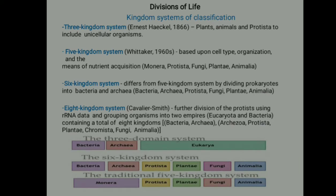Division of life — Kingdom systems of classification. The Three Kingdom system was proposed by Ernst Haeckel in 1866, including plants, animals, and Protista to include unicellular organisms. The Five Kingdom system was developed in the 1960s based on cell type, organization, and mode of nutrition, comprising Monera, Protista, Fungi, Plantae, and Animalia.